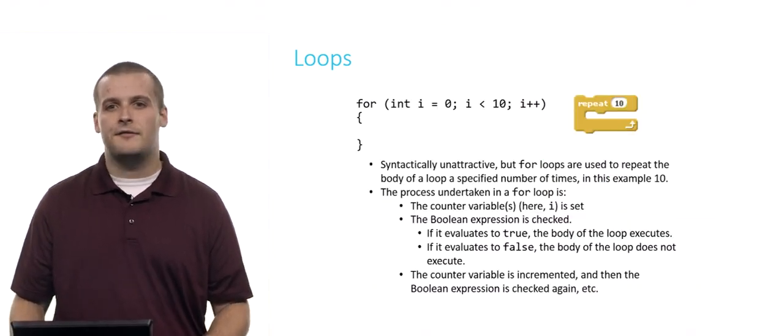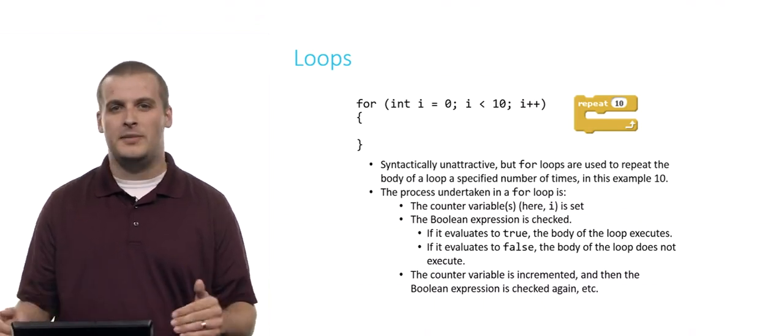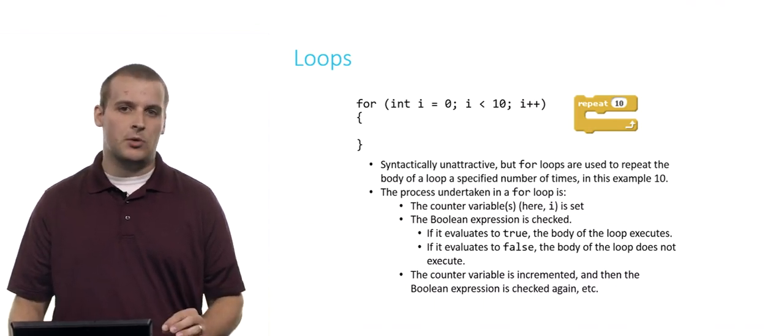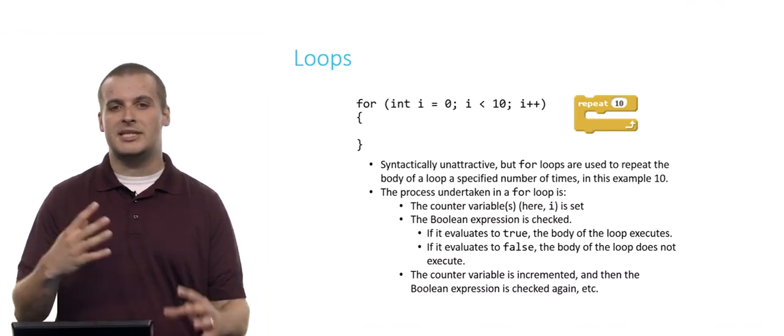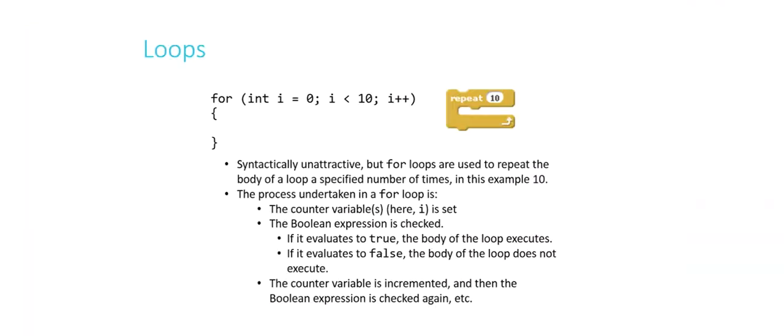Lastly, we have a for loop. For loops are kind of syntactically unattractive and there's a lot going on here, so bear with me as we try and break these pieces apart. Generally, the use case of a for loop is you want to repeat something a specific number of times. In this example here, I have the repeat block from Scratch, which is analogous to the for loop in C, repeating something 10 times. And the for loop on the left there, which is a for loop that would do the same thing. This would go 10 times. We're counting from zero, we increment i each loop, each path through the loop, and we keep doing that until i is less than 10.